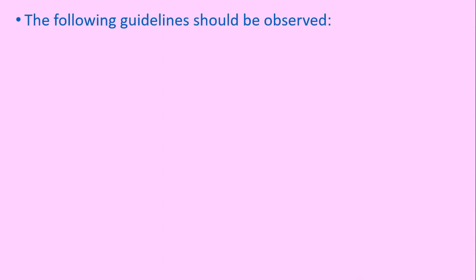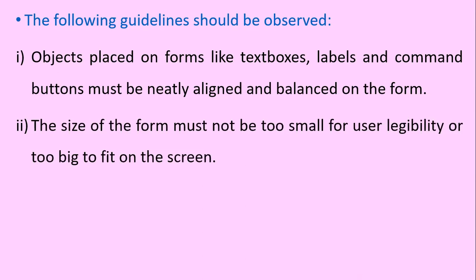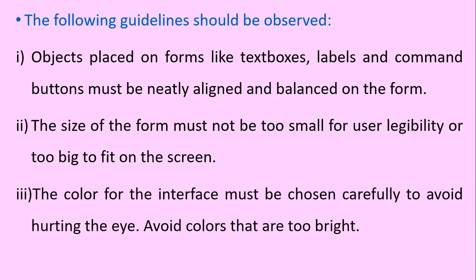The following guidelines should therefore be observed. Number one, the objects placed on forms like text boxes, labels and command buttons must be neatly aligned and balanced on the form. Number two, the size of the form must not be too small for user legibility or too big to fit on the screen. Number three is the color for the interface, which must be chosen carefully in order to avoid hurting the eye. Always avoid colors that are too bright.